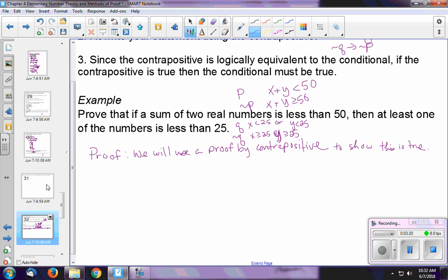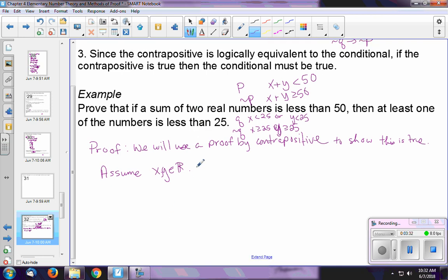So let's take a moment here and assume that X and Y are real numbers, since that's what we're referring to, the sum of any two real numbers, such that X is greater than or equal to 25, and Y is greater than or equal to 25, which, remember, the contrapositive flips these around as well, it doesn't just negate them.